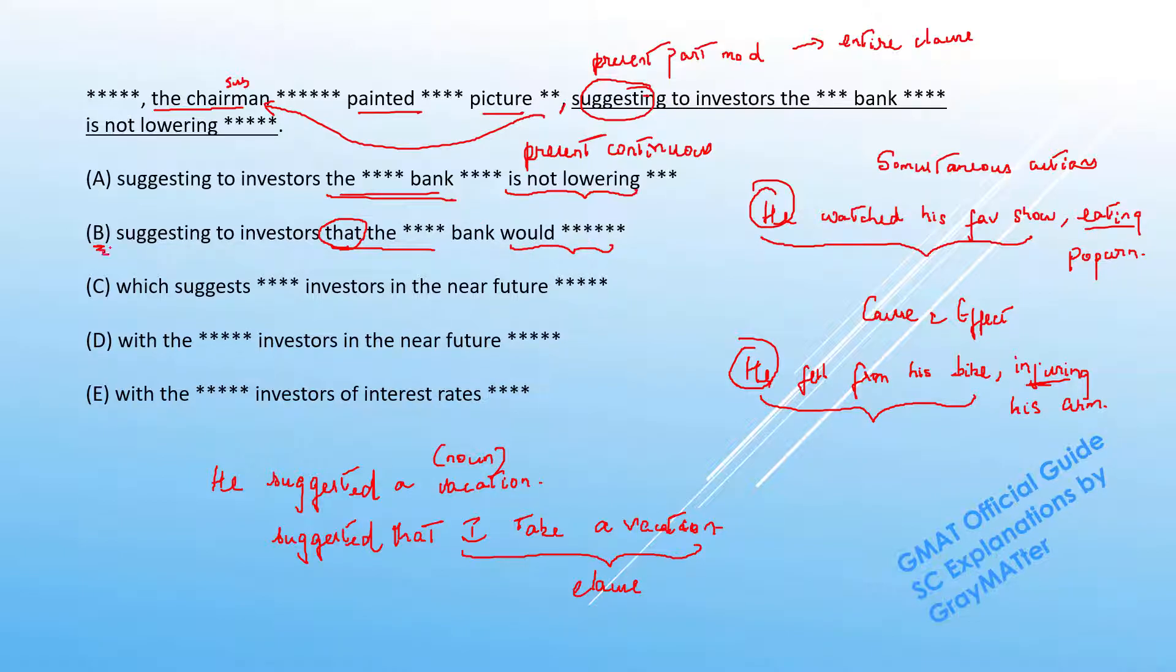Now C starts with "which." This "which" is referring to the optimistic picture of the economy and you can definitely say this picture suggests something to the investors and all that. But there's something I want to point out about C, D, and E: even though C, D, and E start with these "which," "with," and "with" constructions that actually change the meaning in certain ways, we really don't have to deal with them right now and I shall explain these "with" constructions in future videos.